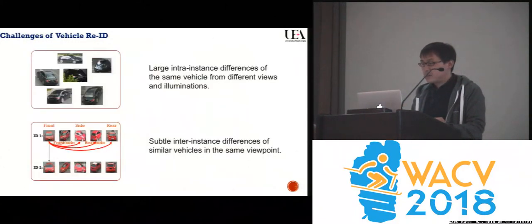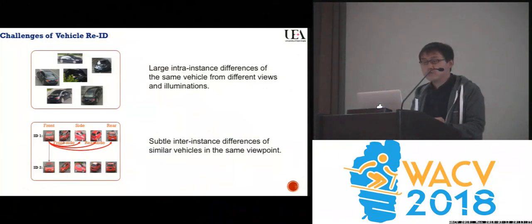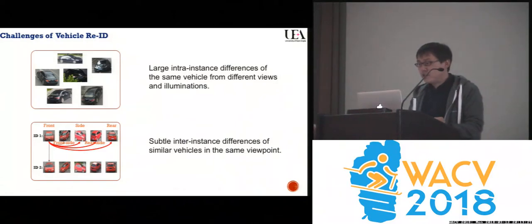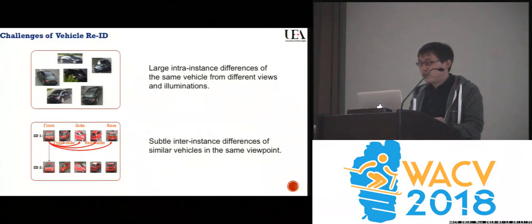Compared with a similar problem, person re-ID, Vehicle Re-ID faces more challenges due to the vehicle's special 3D structure. A vehicle in multiple surveillance cameras usually looks highly different across varying viewpoints, with little or even no overlap in visual patterns shared across different views.